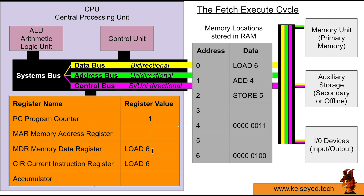Next, the computer needs to decode the instruction. In the current instruction register, it decodes what the instruction means based on assembly language. We have machine code, assembly language, and higher level programming languages. Assembly language is a low-level language that the computer decodes and executes. The execution involves taking the address bus down to memory location 6 and using the data bus to load the value inside — a binary value equal to the denary value 4. That's the first complete cycle.